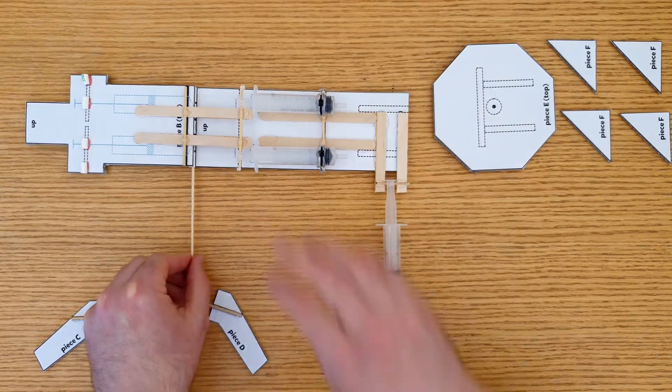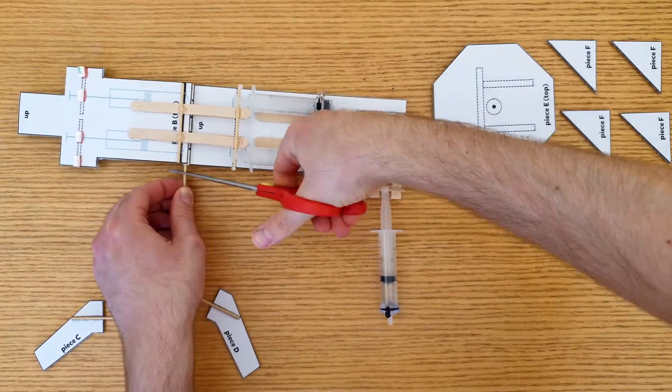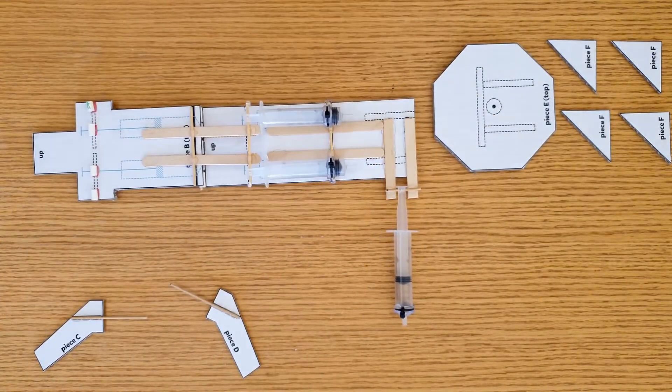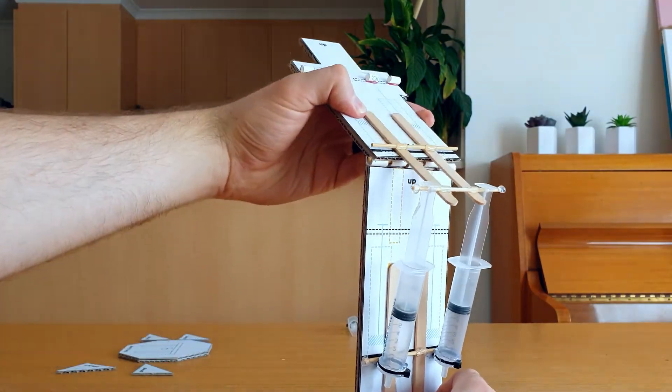Slide a new skewer through these 5 straws, this will act as a hinge. Cut off the bit poking out and use a little bit of hot glue to seal the ends shut. Check that it can bend at this join, you'll notice the syringe is moving as you do this.